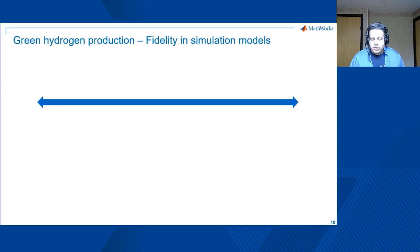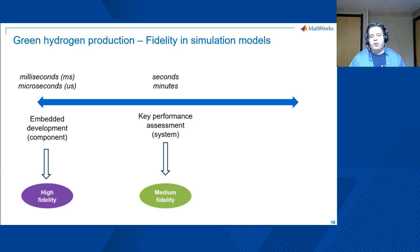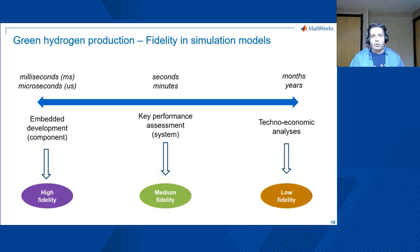If you have made the choice of using simulation for your development in green hydrogen, fidelity is going to be a critical element. If you are focusing on embedded development of a component, your target is milliseconds or microseconds, and you will naturally need high-fidelity models. If you are interested in assessing key system performance over seconds or minutes, medium fidelity makes sense. If your goal is to assess feasibility with ROI calculations over months and years, then very agile models with the lowest fidelity will be the right choice.